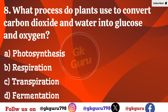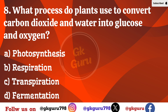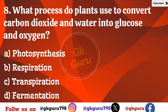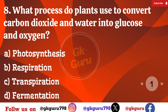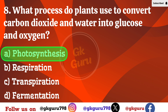Eighth question: What process do plants use to convert carbon dioxide and water into glucose and oxygen? Option A: photosynthesis. Option B: respiration. Option C: transpiration. Option D: fermentation. Correct answer: Option A, photosynthesis.